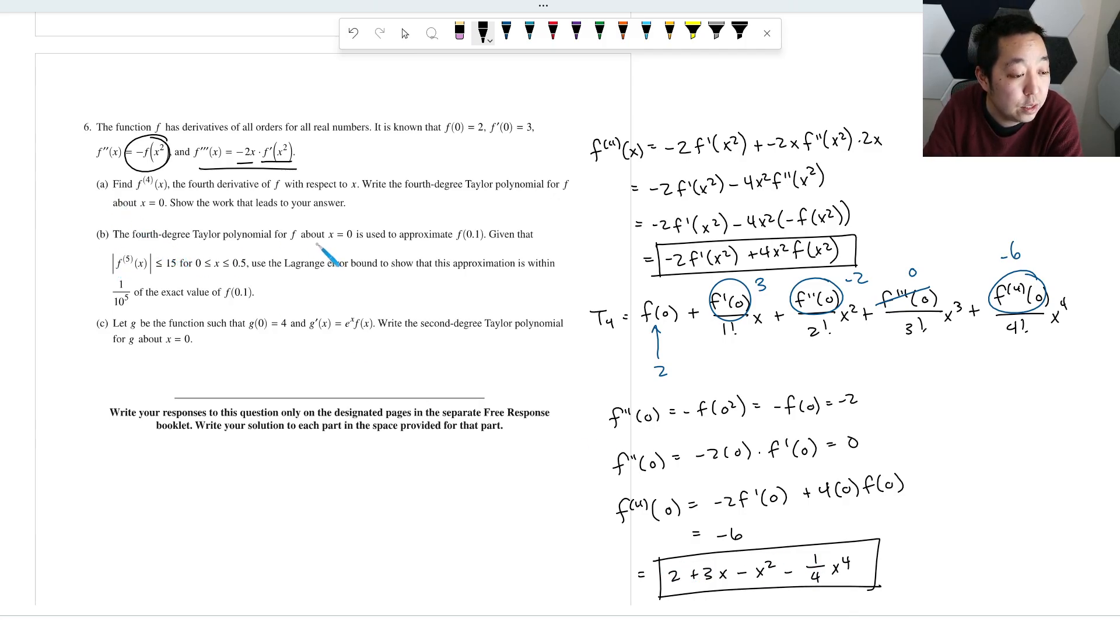The fourth degree Taylor polynomial about x equals 0 is used to approximate f(0.1). Given that |f⁽⁵⁾(x)| ≤ 15 between 0 and 0.5, use the Lagrange error bound to show that this approximation was 10⁻⁵ of the exact value.